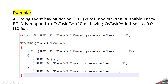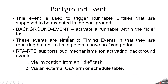The runnable entity RE_A is mapped to an OS task of 10ms, but we have a timing trigger of 20ms. The RTE handles this using a global variable initialized to 0. Every 10ms the task checks whether the variable equals 0; if so, the runnable is triggered, then the variable is set and decremented. To avoid this complexity, you can create a separate OS task for 20ms and map it directly. This example shows how the RTE handles a mismatch between runnable period and OS task period.